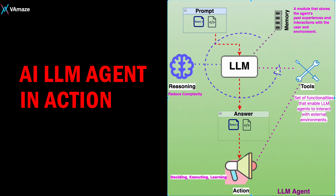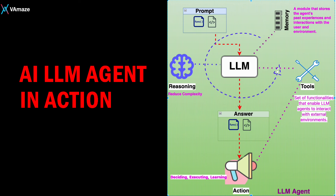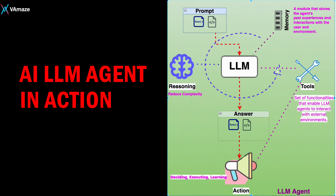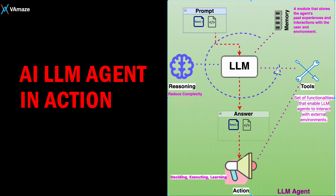The action component goes beyond just generating text — agents can take action in the world by integrating external tools, APIs, and robotic systems. This allows them to retrieve information, analyze data, and even perform physical tasks.